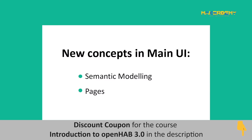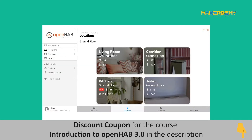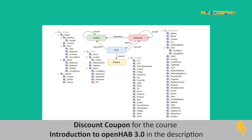To better understand the Main UI, let's understand the underlying concepts of semantic modeling and pages. A semantic model is a method to organize your items in OpenHAB by defining a logical structure for your smart home. Semantic models are used to automatically create different kinds of pages that contribute to the Main UI. Besides this, semantic modeling also helps you define, generalize, and simplify rules based on patterns and common automation purposes.